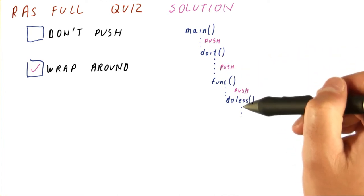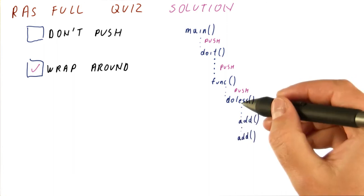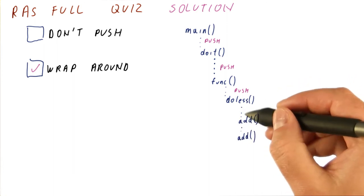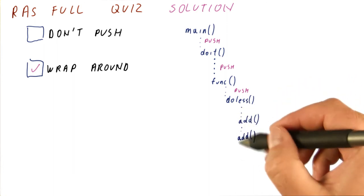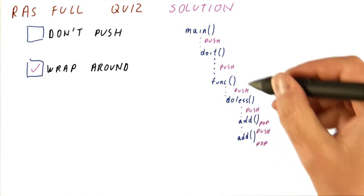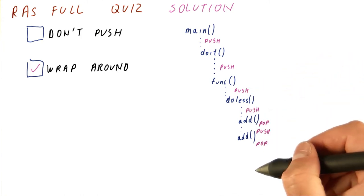At this point, we're calling the function doless, and it might call, for example, the add function many, many times. So we're getting to the place where functions are really small, and ideally we would push each time and then pop when we return.